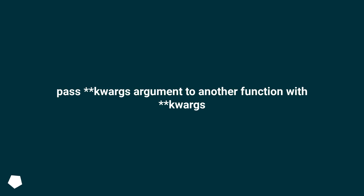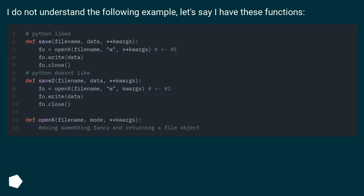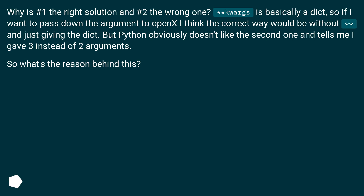How do you pass a kwargs argument to another function with kwargs? I don't understand the following example. Let's say I have these functions. Why is number 1 the right solution and number 2 the wrong one? kwargs is basically a dict, so if I want to pass down the argument to OpenX I think the correct way would be without the double-star and just giving the dict. But Python doesn't like the second one and tells me I gave 3 instead of 2 arguments — so what's the reason behind this?